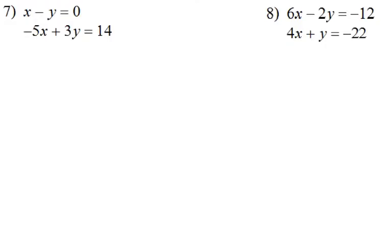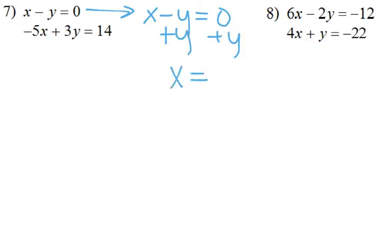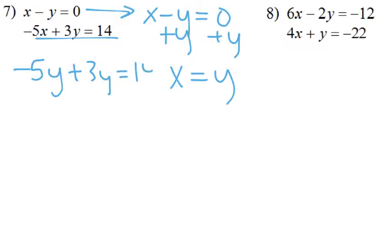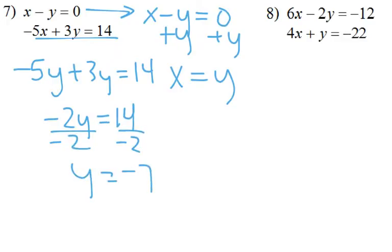Sometimes you have to do that first step, like in numbers 7 and 8. In number 7, let's take the first equation x minus y equals 0 and get x by itself. I'm going to add y to both sides, so I've got x equals y. That tells me x and y are the same number. So I can replace that x with y. Then we simplify: negative 5 plus 3 gives negative 2y equals 14, divide by negative 2, and y equals negative 7. If y is negative 7, x is also negative 7. So my answer is negative 7, negative 7.